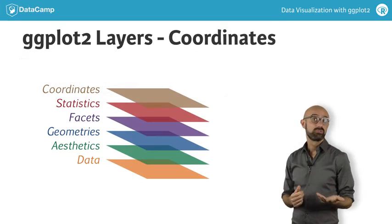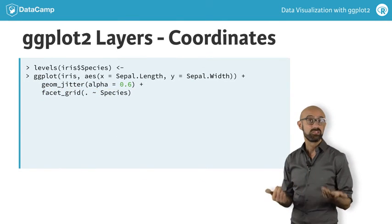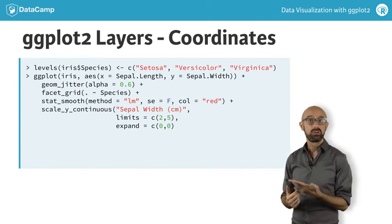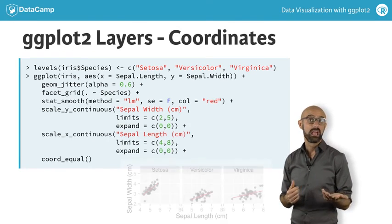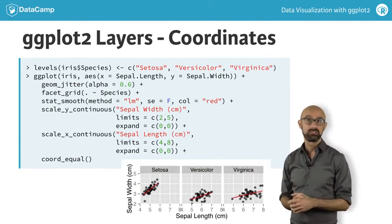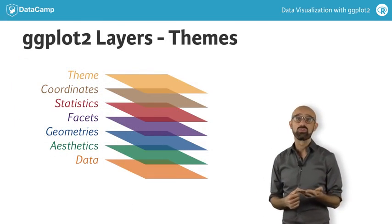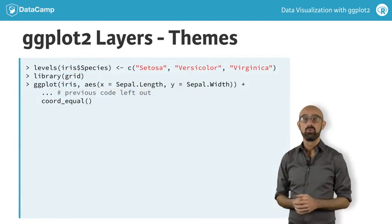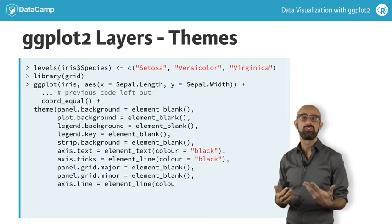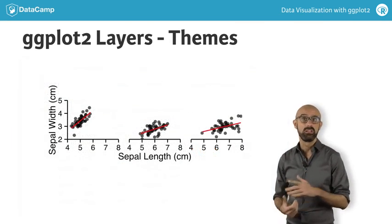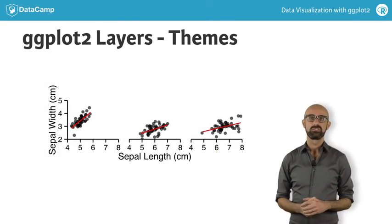Next comes the coordinates layer, which allows us to specify the precise dimensions of the plot. Here, we've also cleaned up the labeling and the scaling of both the x and y axes. And finally, the theme layer controls all the non-data ink on our plot, which allows us to get a nice-looking, meaningful and publication-quality plot directly in R. Let's explore these concepts further in the exercise.